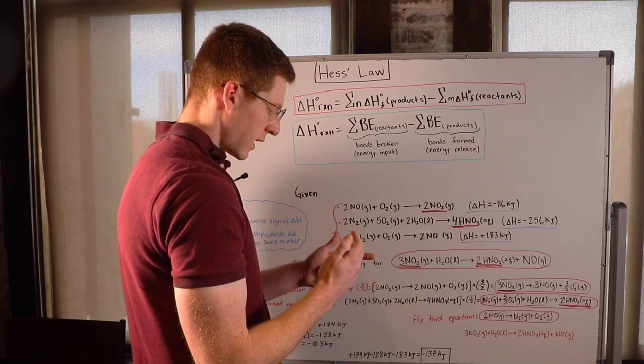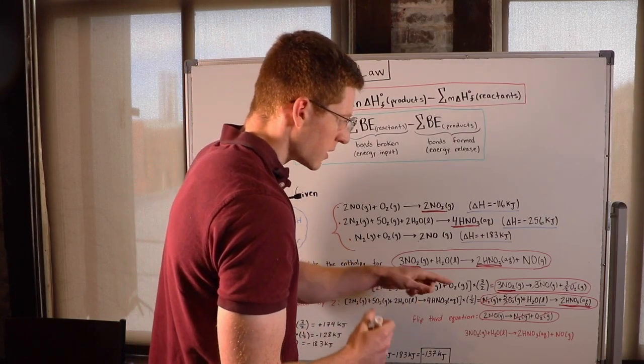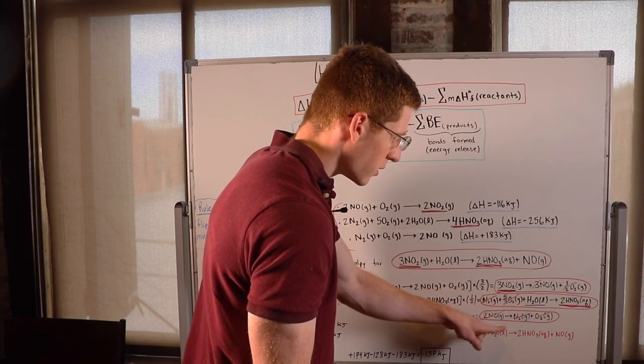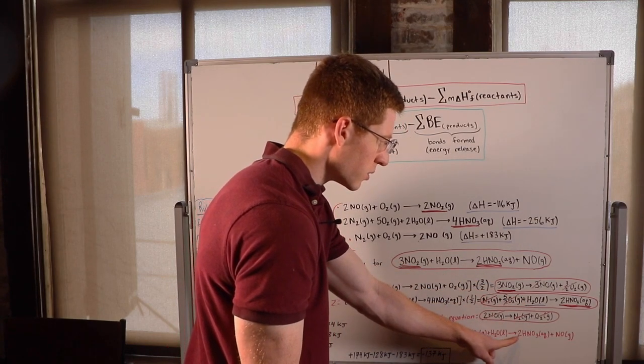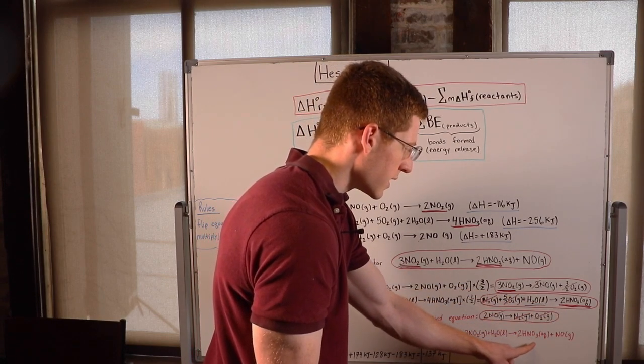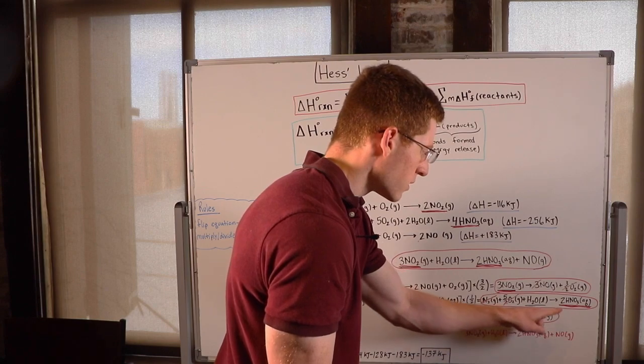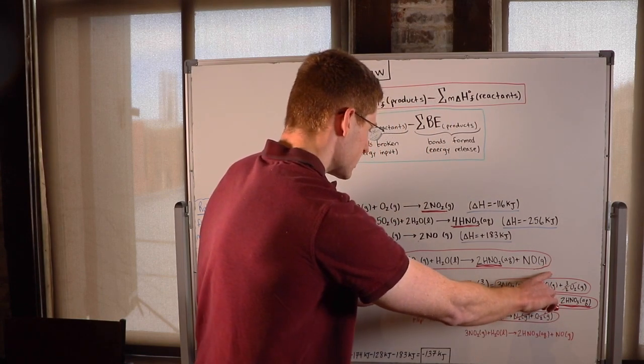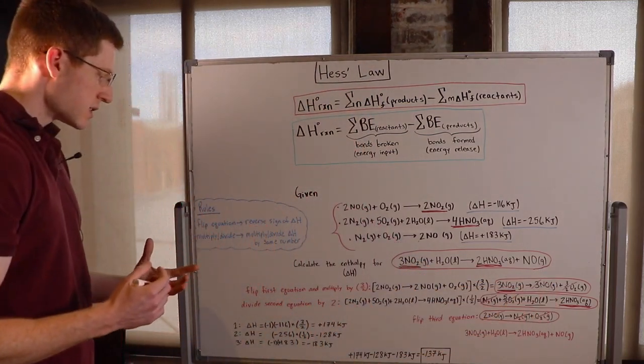So finally, when I add all of these together, I'll be left with 3 NO2 plus this H2O goes to 2HNO3 plus NO. So now I have my final desired equation. So now I have to go back and see, what did I have to do to these given equations to manipulate them to get here?